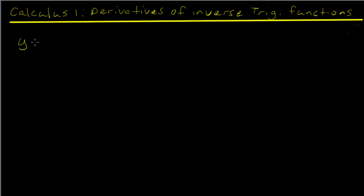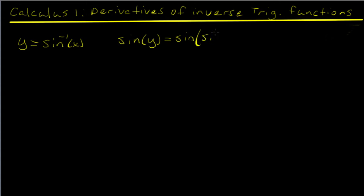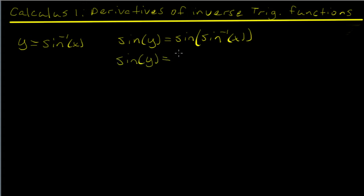We're going to say y equals the sine inverse of x. The trick we're going to use is to take the sine of both sides, so we say the sine of y equals the sine of the sine inverse of x. If you remember from pre-calc, if you take the function of an inverse function, all you get out is x — so we get sine of y equals x.